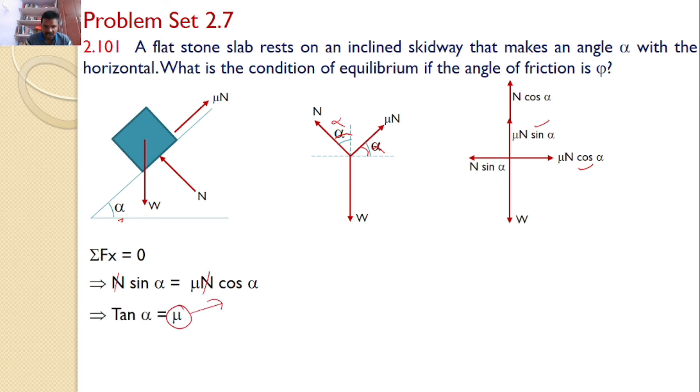But mu is the coefficient of friction that you can consider as mu equals tan phi, where phi is the friction angle. So tan alpha equals tan phi, and alpha equals phi. This is the answer.